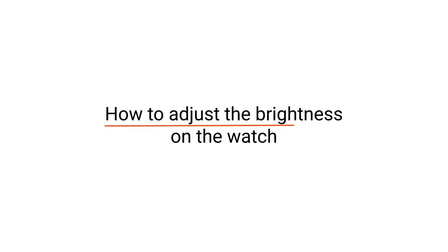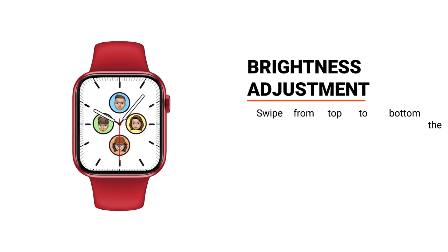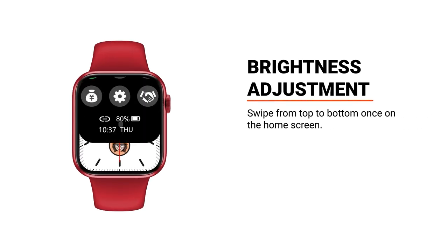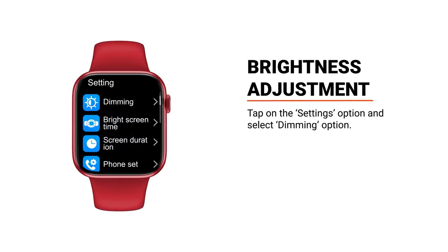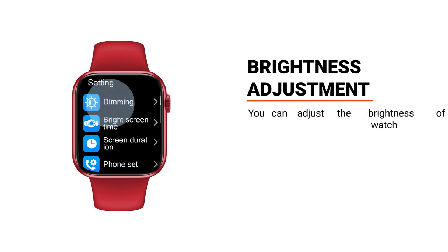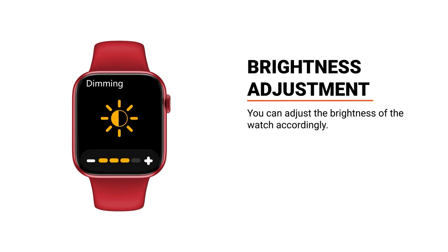How to adjust the brightness on the watch: swipe from top to bottom once on the home screen. Tap on the settings option and select the dimming option. You can adjust the brightness of the watch accordingly.